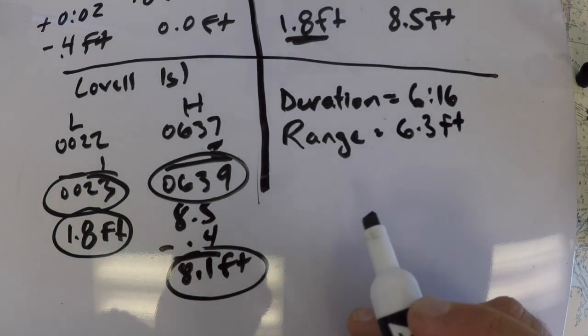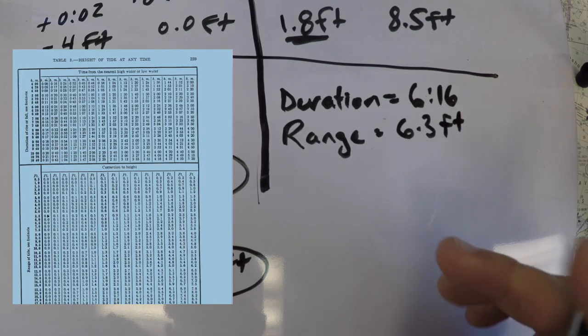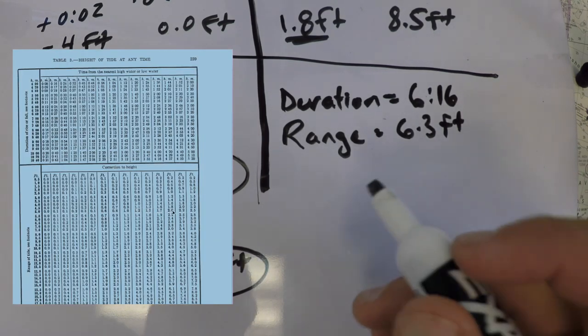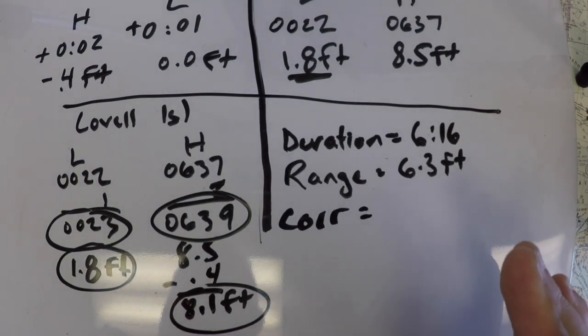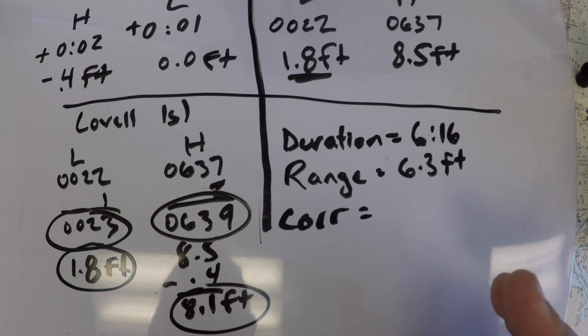And then the last piece of information, usually you're going to get the time from nearest high or low. But since we're solving a problem based on the time, we're going to look at the correction factor. And so given that we want our water in essence to be 5.1 feet above datum,